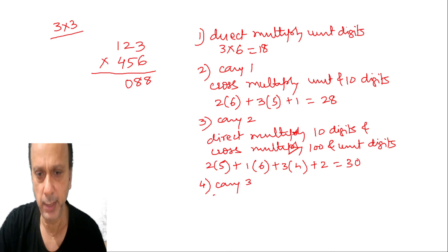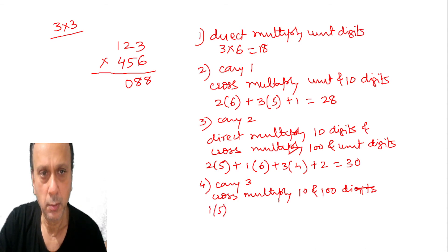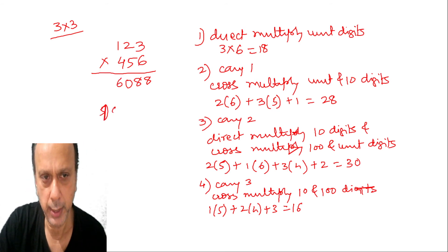Now you have to cross multiply 10 and 100 digits. So it will be 1 into 5 plus 2 into 4, add 3. That will be 16. So unit place answer slot 6 and then carry 1 for the next step. And now direct multiply 100 digits.